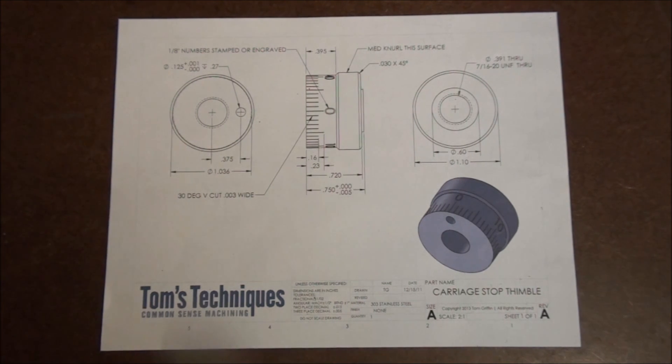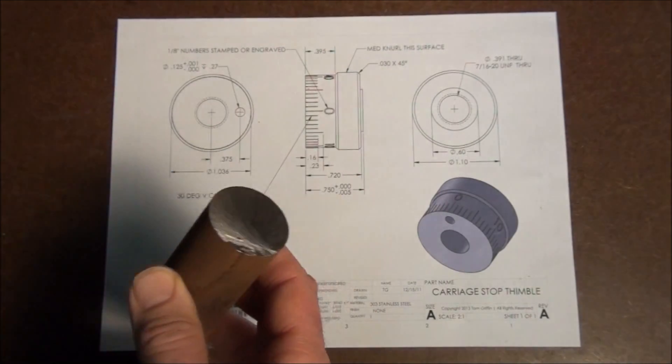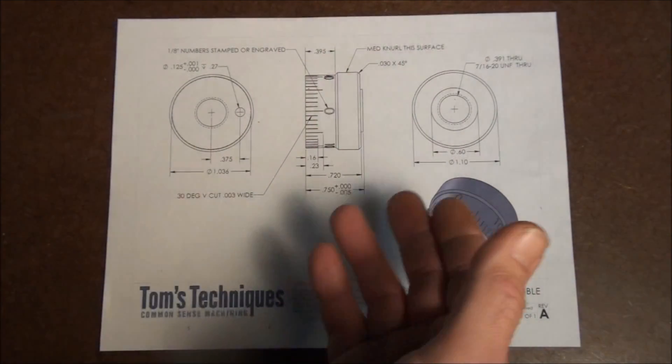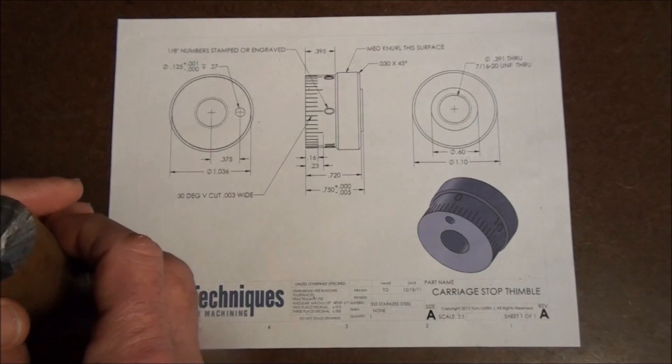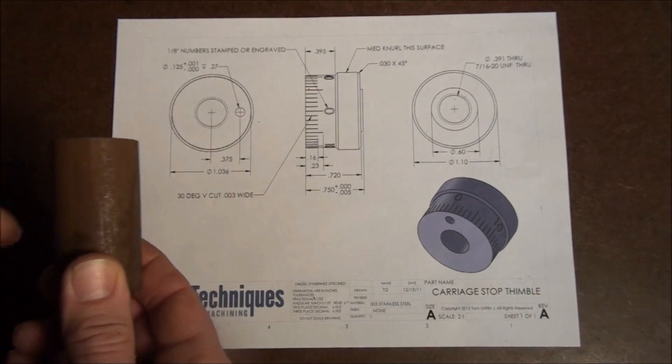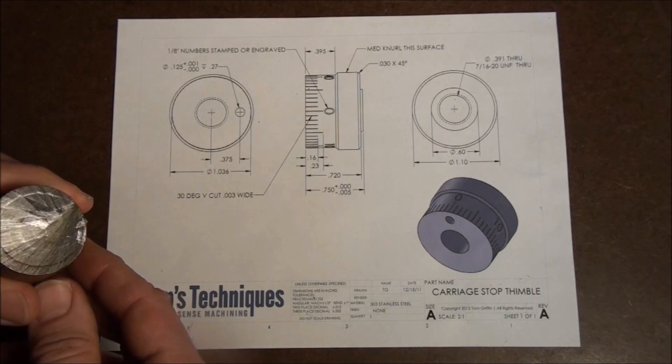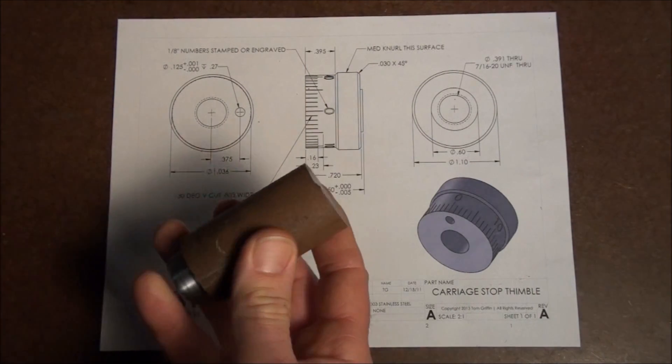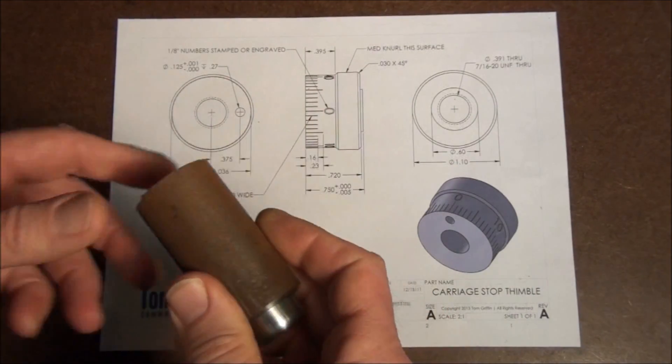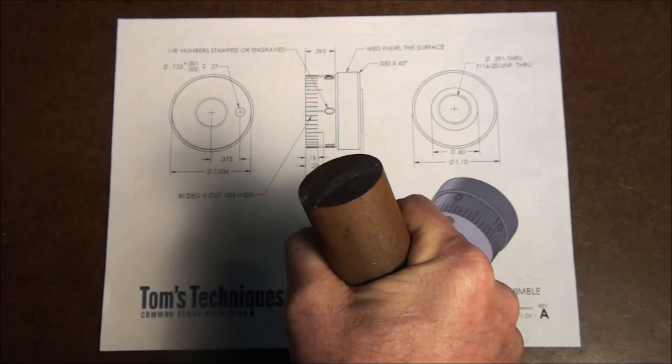So let's just go over the order of operations for this part, at least how I would do it. I'm going to use a piece of inch and a half mild steel. We're turning it down to 1.1 inches. I suppose inch and a quarter would be more appropriate, but I don't have any on hand. So we're using inch and a half. We'll have to take some heavy cuts to get it down to the right diameter. But that's no big deal.